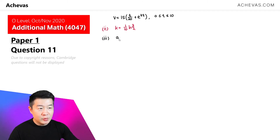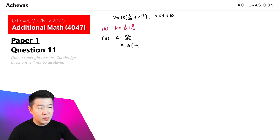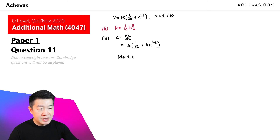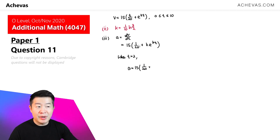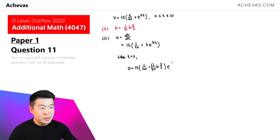For acceleration, I'm going to let the notation a represent it. a is dv/dt, where v is the speed given previously. Differentiating with respect to t, we have 15 times 1 over 20, plus k times e to the power of kt. We are supposed to find the acceleration when t equals 2. So when t equals 2, the acceleration is 15 times 1 over 20, plus k — which is 1 over 10 ln(3/2) — times e to the power of 1 over 10 ln(3/2) times 2. Pressing this into the calculator, the acceleration is 1.41.